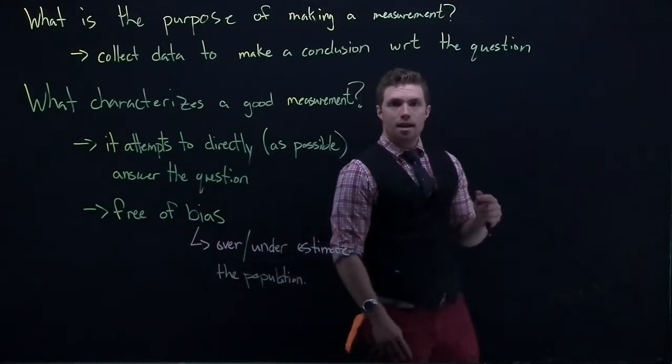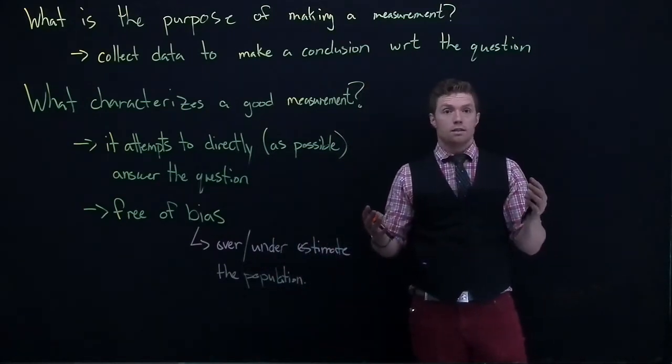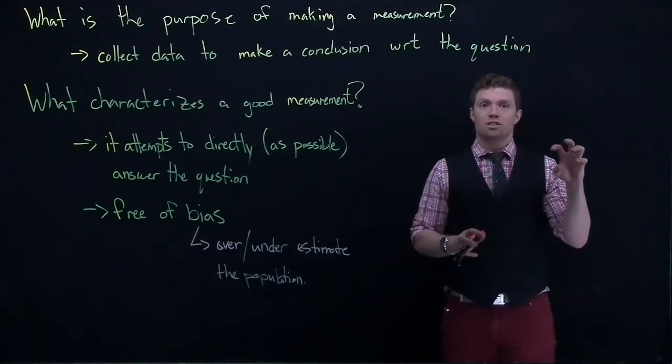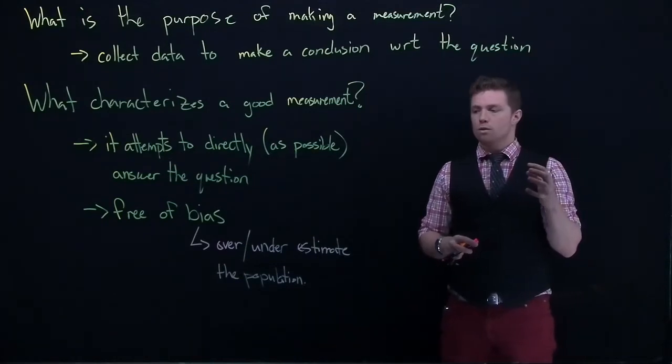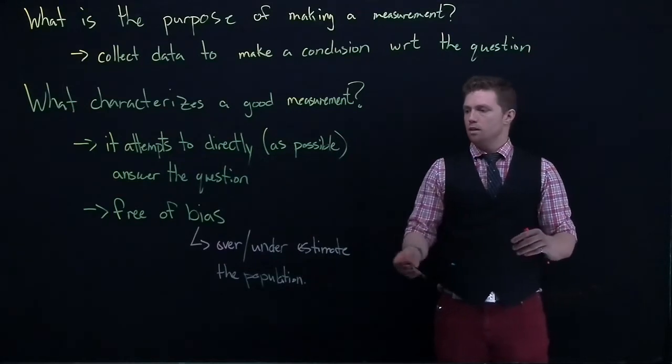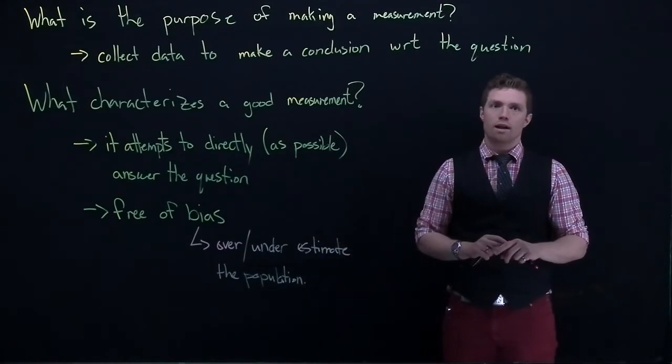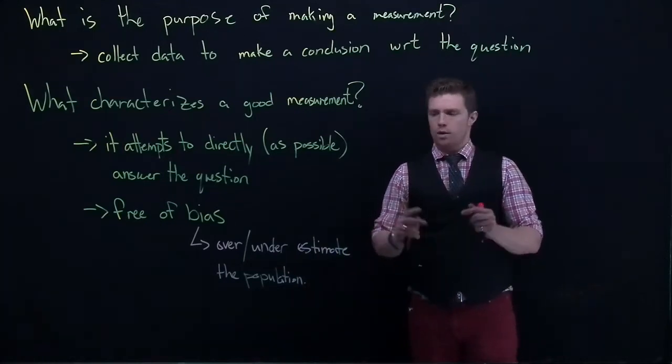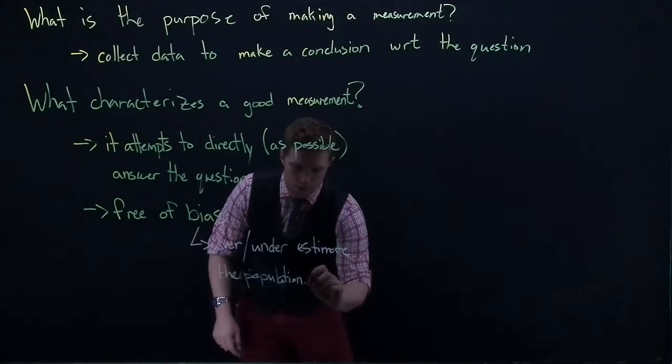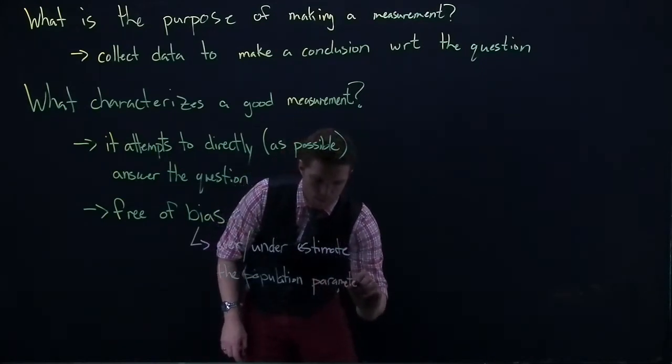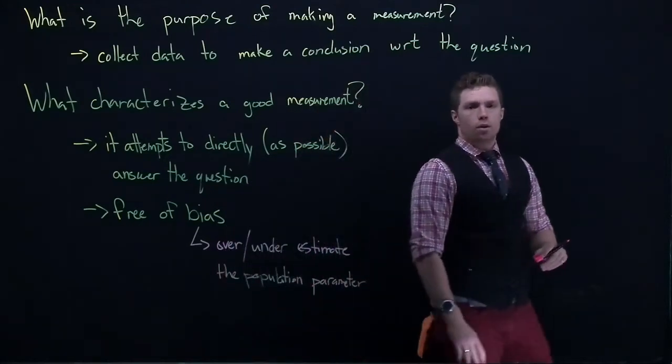Remember, when we take our sample, we're trying to get it representative of the population. And when we take our statistic, we're trying to make some approximation of the parameter about the population. And if we have bias, our statistic is going to overestimate or underestimate whatever the population parameter is. Okay. And let me put that population parameter.